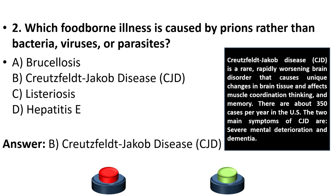CJD is a rare, rapidly worsening brain disorder that causes unique changes in brain tissue and affects muscle coordination, thinking, and memory. There are about 350 cases per year in the US. The two main symptoms of CJD are severe mental deterioration and dementia.